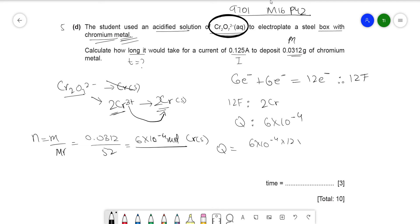You make Q the subject of the equation, and you get 6 × 10⁻⁴ times 12 times 96,500—this constant will be provided in the data booklet—divided by 2. And so your answer should be...